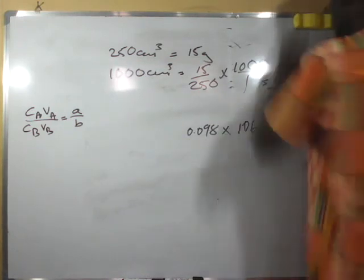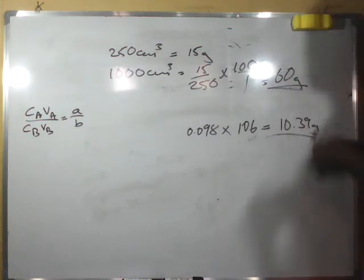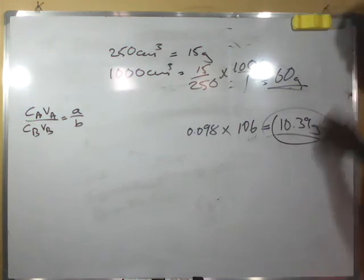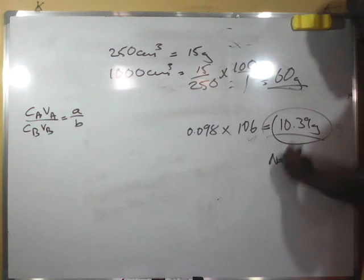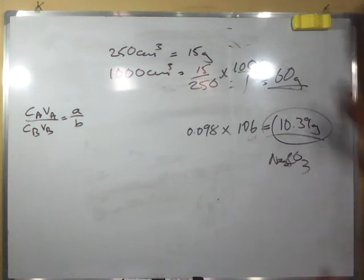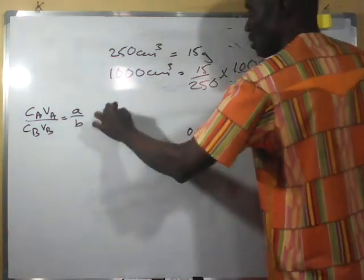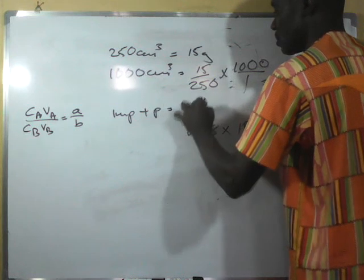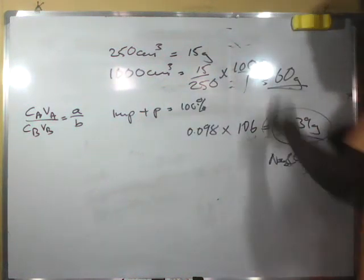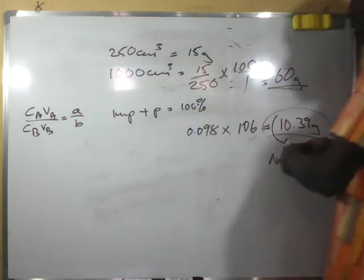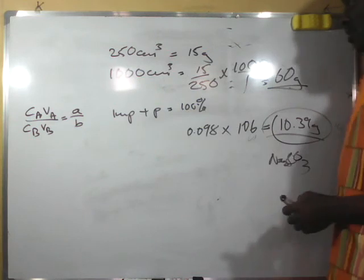This 60 grams includes both the impurities and the pure substance. We know the pure mass of sodium trioxocarbonate is 10.39 g. Since impure + pure = 100%, we can calculate the percentage purity first and then subtract from 100 to get the percentage impurity.